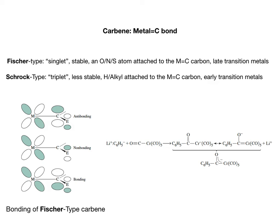Fischer carbene is typically very stable and not very sensitive to air and water. The key structural feature of Fischer carbene is that there's a heteroatom that is highly electronegative attached to the alpha carbon — the carbon that directly bonds to the metal center.